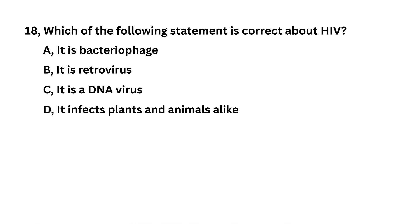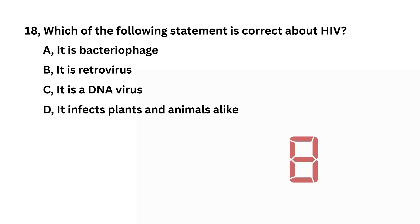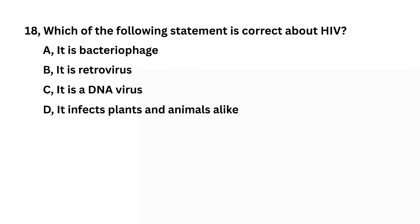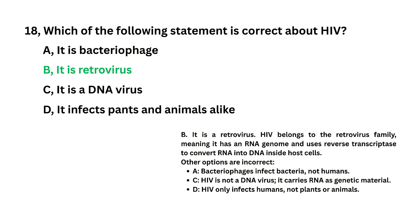Which of the following statements is correct about HIV? It is a bacteriophage; it is a retrovirus; it is a DNA virus; it infects plants and animals alike. It is a retrovirus is the answer.